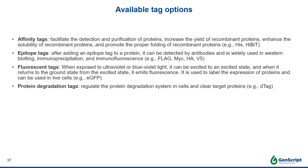Here is additional information about tag options provided by the tool. The His-tag and HA tag are affinity tags that can be used to label the target protein to facilitate detection and purification. The FLAG, MYC, HA tag, and V5 epitope tags are epitope tags used to label the target protein so it can be detected by antibodies in different downstream assays. The tool provides one fluorescent tag, EGFP, used to label the target protein for visualization. The tool also provides one protein degradation tag called the DTAG, used to tag the target protein for degradation.